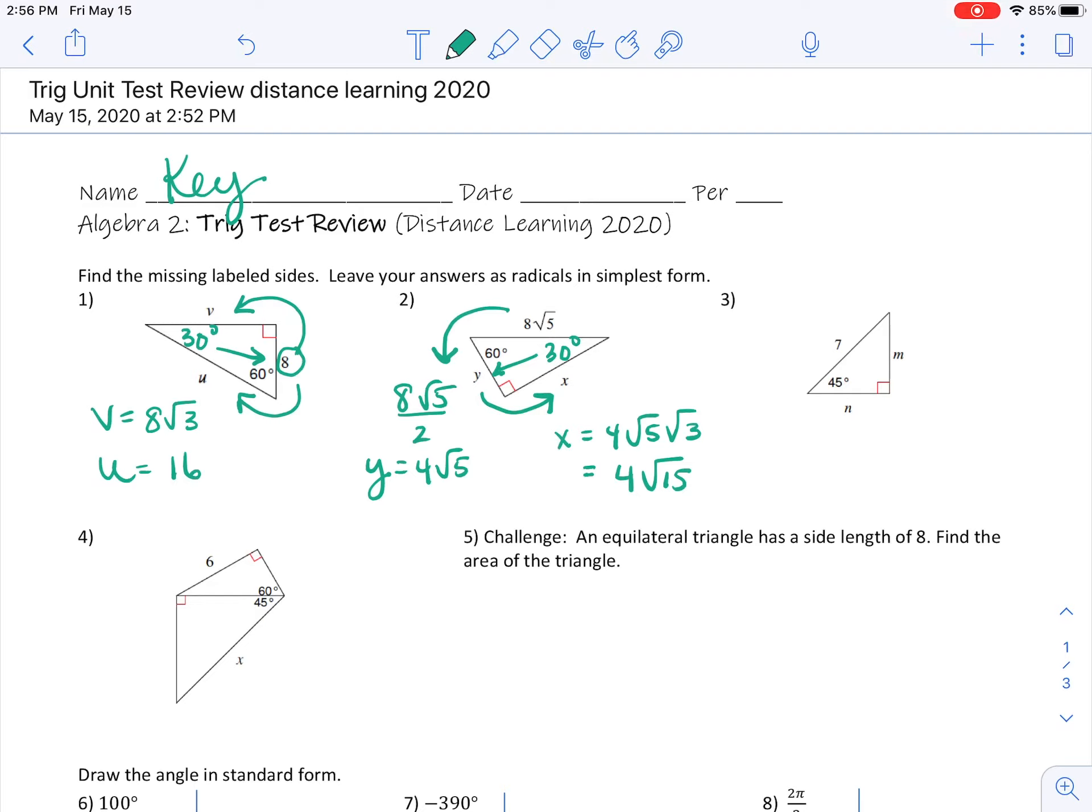Number three. 45-45-90 triangle. The hypotenuse comes from taking one of the legs and multiplying it by root 2. So working backwards, I'm going to divide by root 2. I have to rationalize the denominator, so I'm going to multiply by root 2 over root 2, get 7 root 2 over 2. Nothing else simplifies, and that is both N and M.